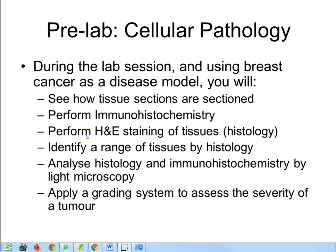You'll be performing hematoxylin and eosin staining of some tissues — I'm not going to tell you what they are, but you're going to have to figure them out from a textbook. You'll be analysing both the histology, which is your hematoxylin and eosin staining, and your immunohistochemistry by light microscopy. And then you'll be applying a grading system to assess the severity of a breast cancer. That's the theory I'm going to take you through in this short video.